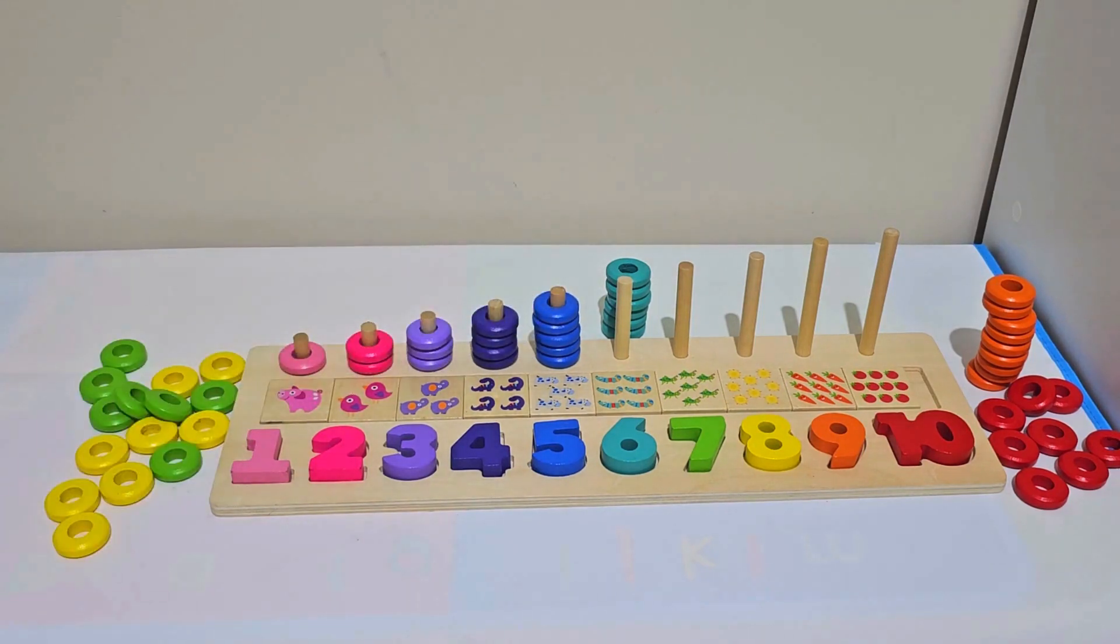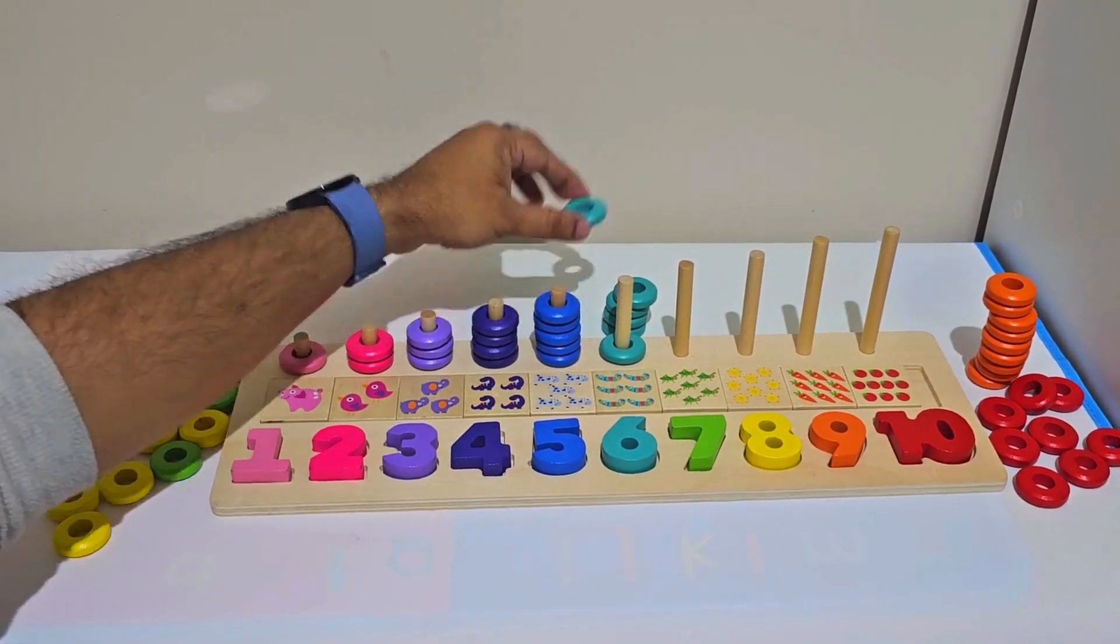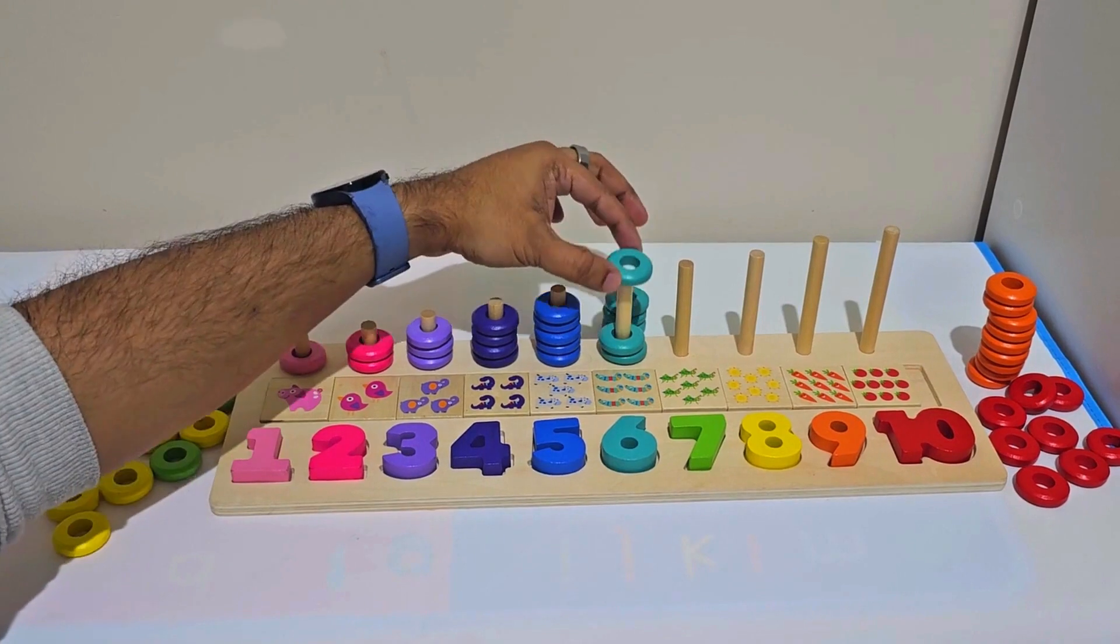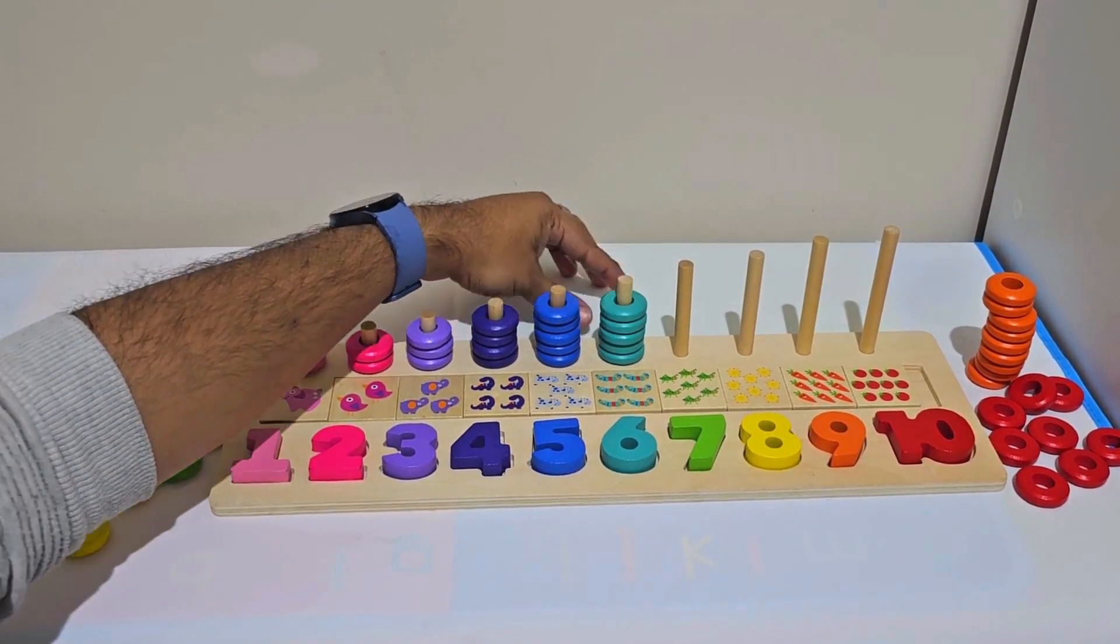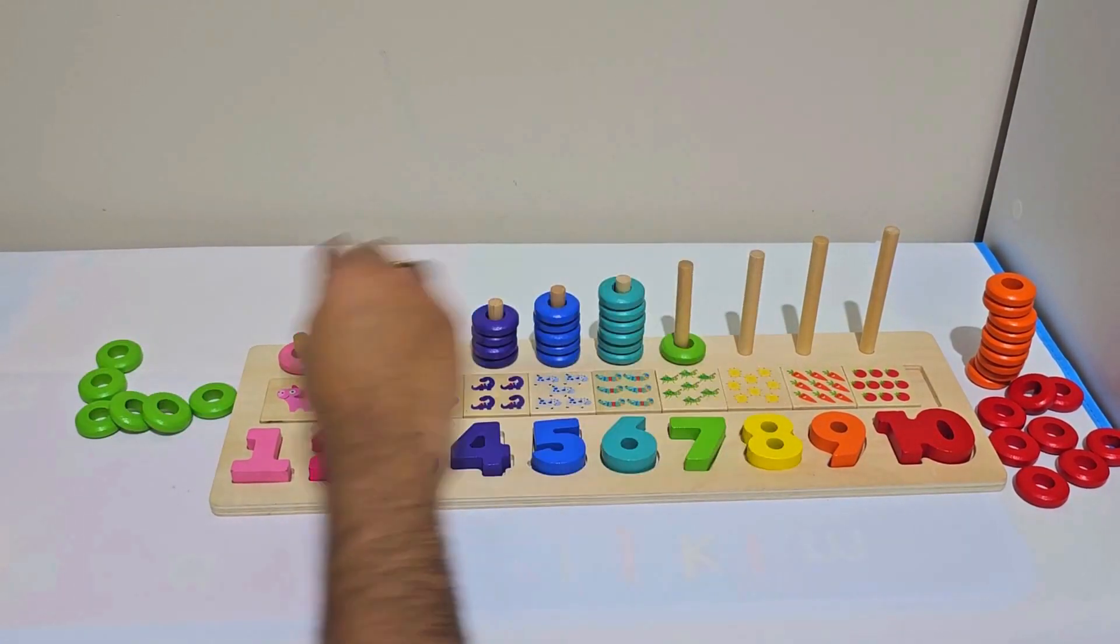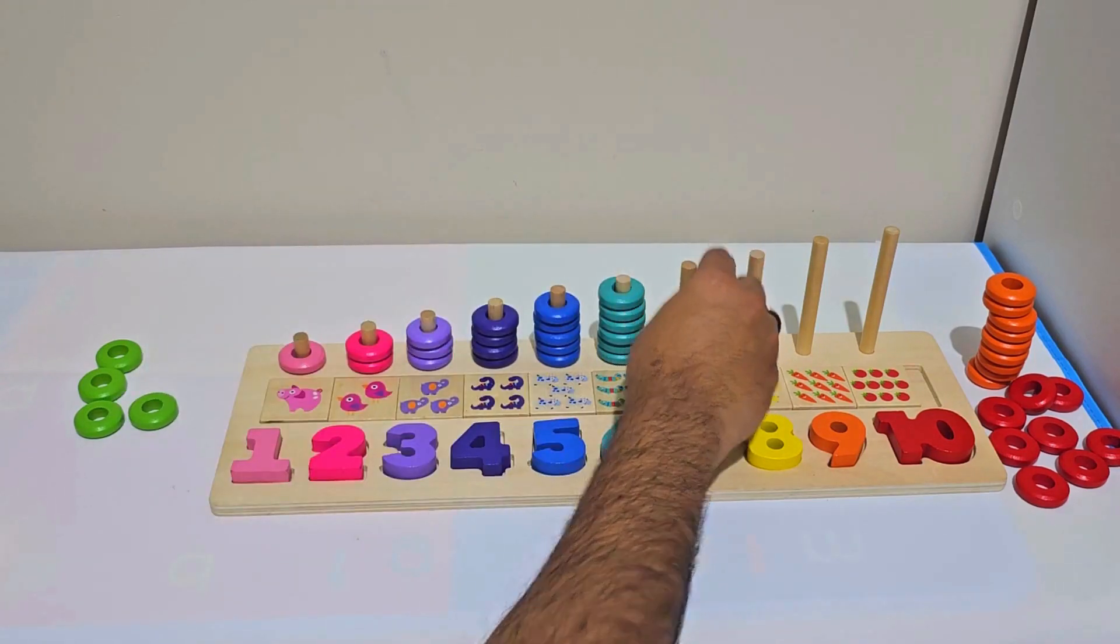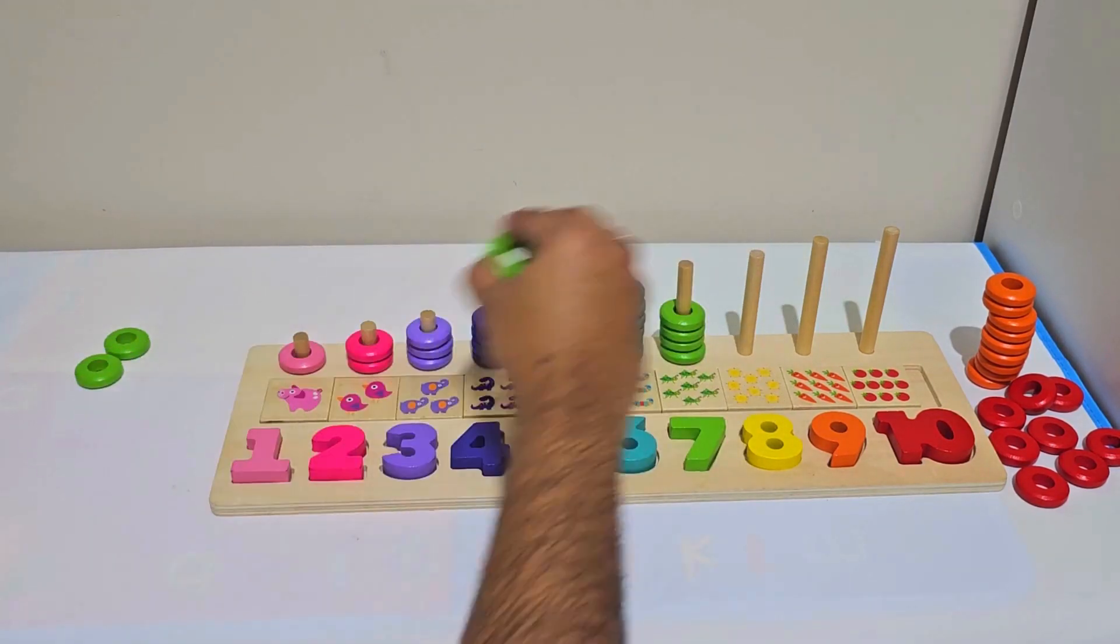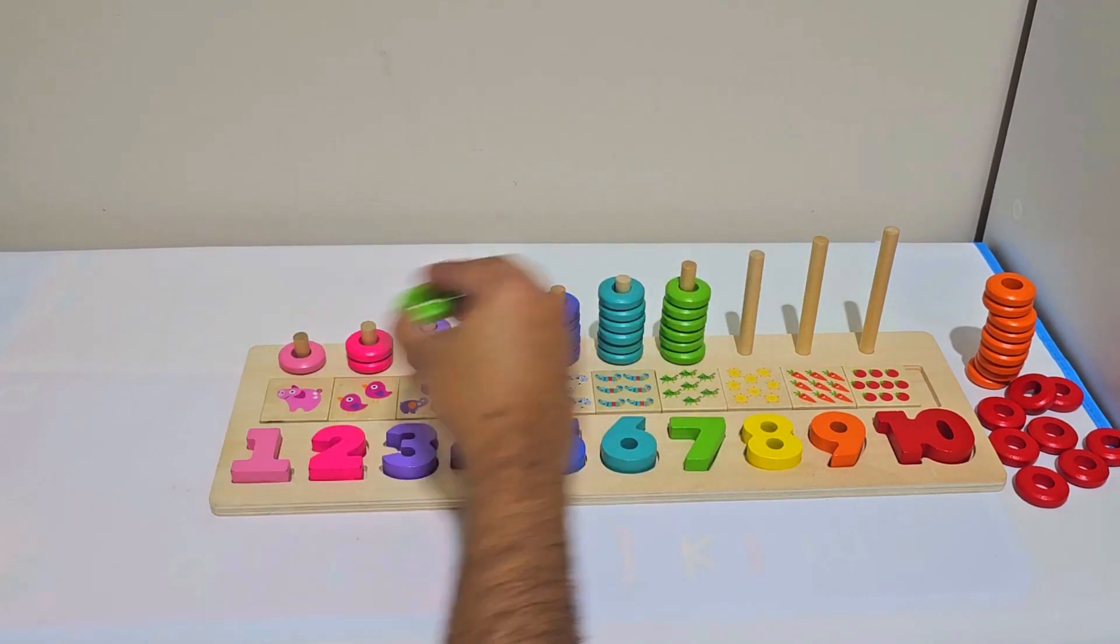Then we will have 6 teal colored rings: 1, 2, 3, 4, 5, and 6. Now we have 7 green colored rings: 1, 2, 3, 4, 5, 6, 7.